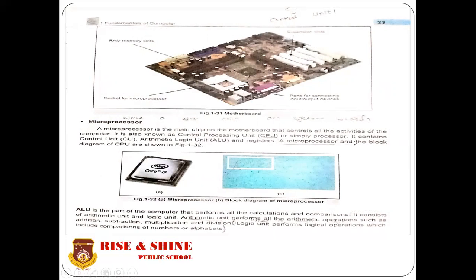The microprocessor contains three main parts: the Control Unit (CU), the Arithmetic Logic Unit (ALU), and registers.